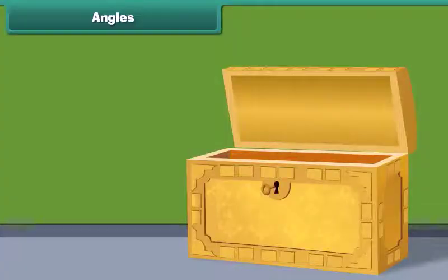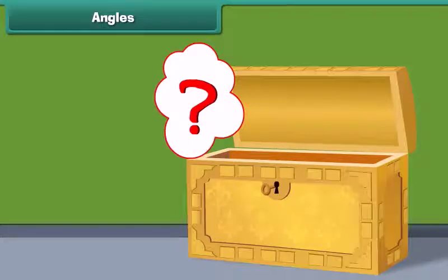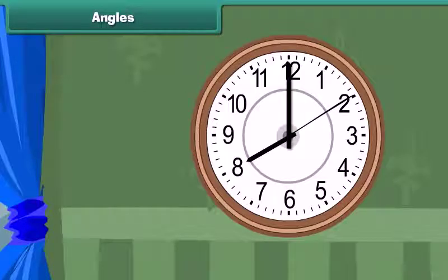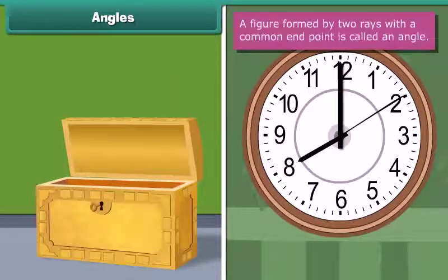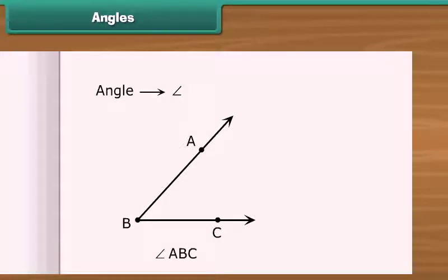Look at this box. What figure it makes? It forms an angle. Similarly, the minute hand and the hour hand in the clock form angles. A figure formed by two rays with a common endpoint is called an angle. An angle is represented by the given symbol. This is an angle ABC. It is represented as angle ABC. Here, B is a vertex. A is a point on one ray, while C is a point on another ray.